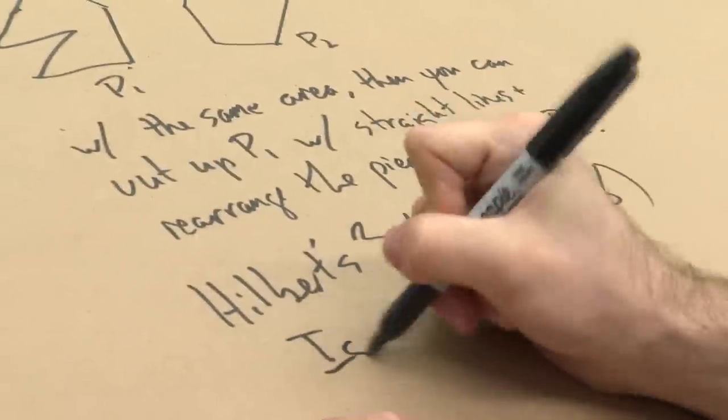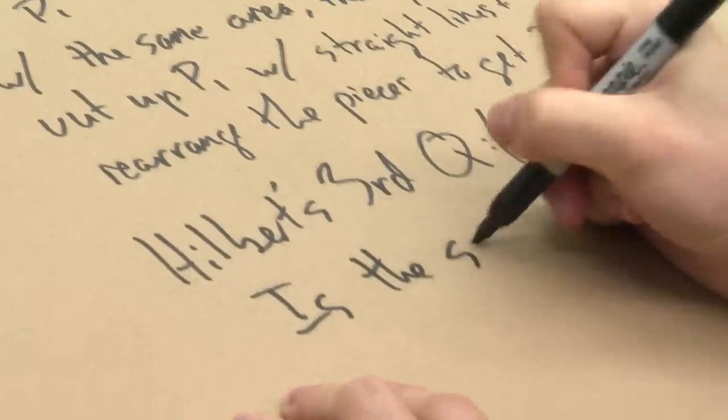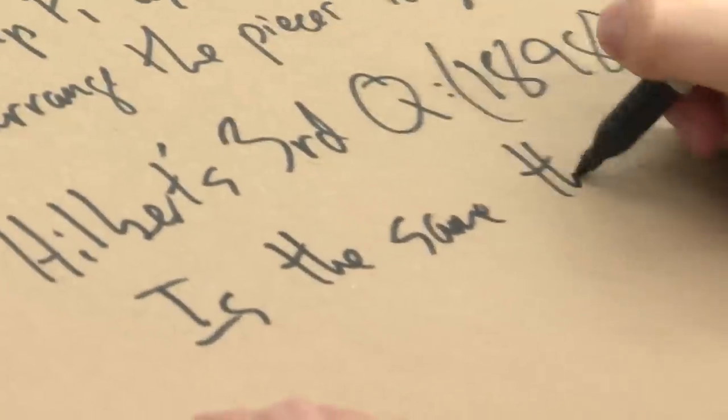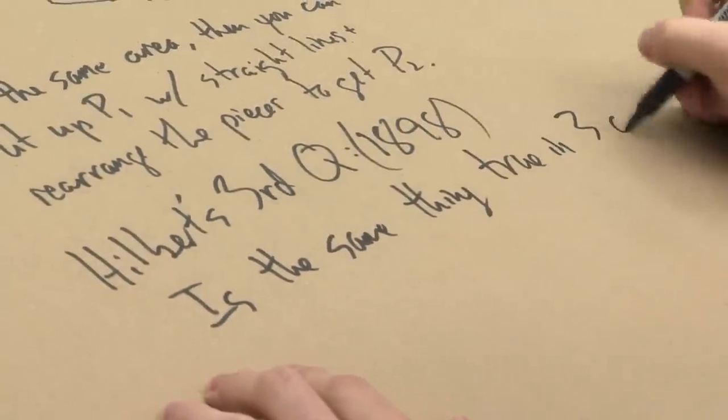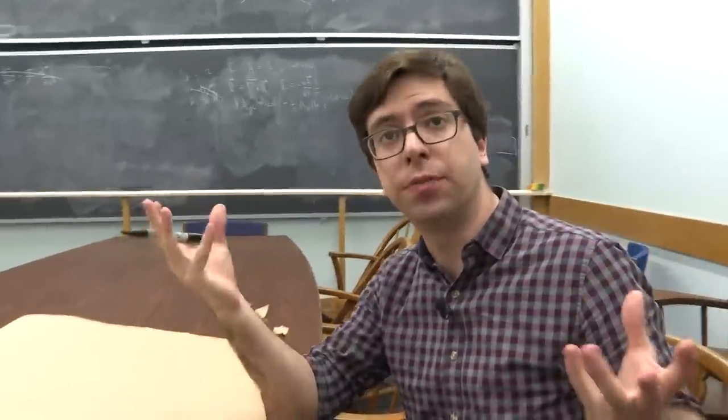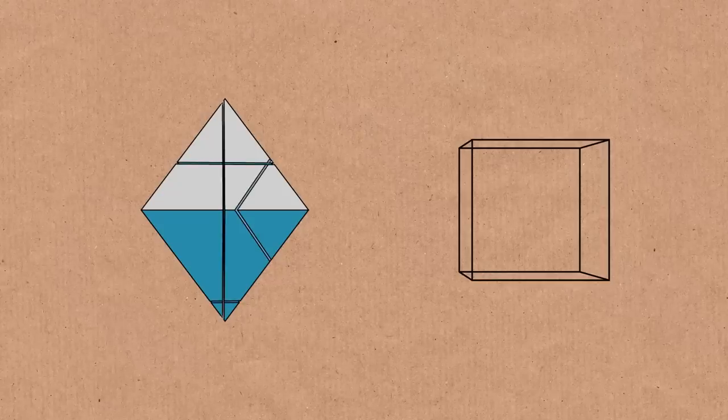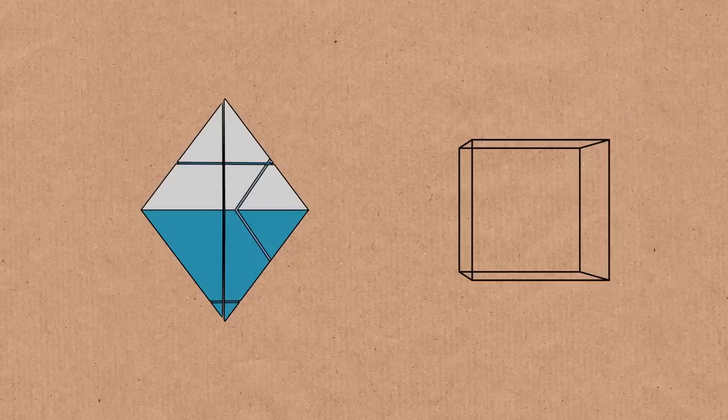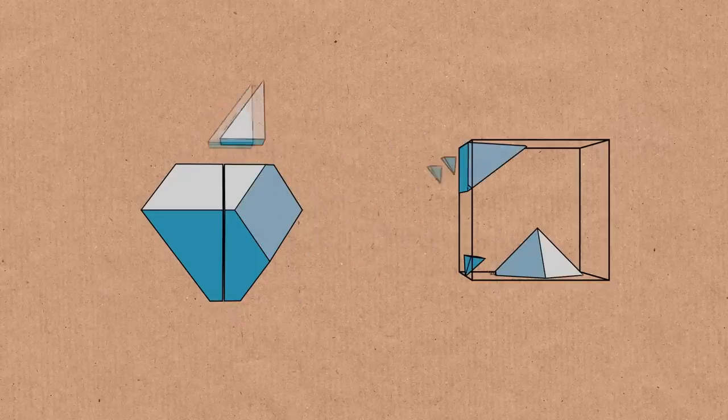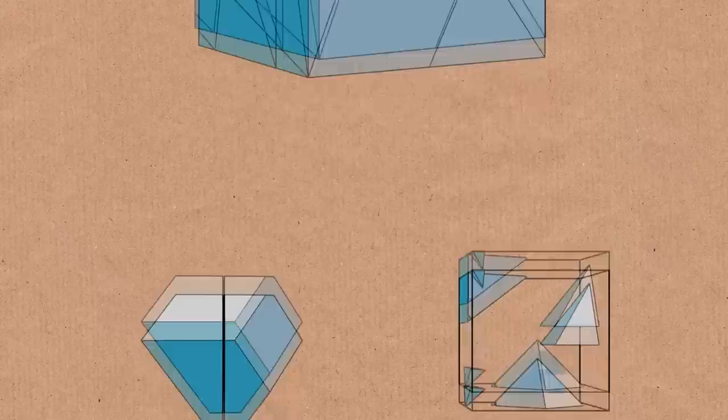So Hilbert's third question, which was in 1898 I think, was: is the same thing true in three dimensions? So what do I mean by that? If you have two polyhedra, so three-dimensional figures which are made out of flat faces, edges, and vertices, and if they have the same volume, can you cut one up into pieces with finitely many cuts and rearrange the pieces to make the other?